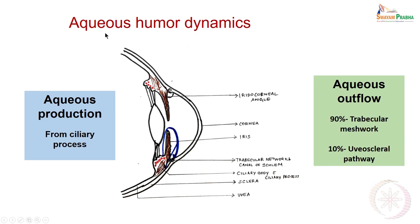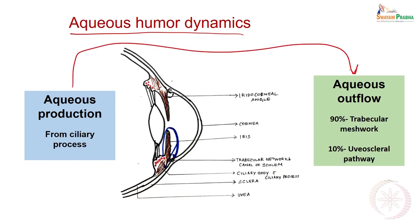Therefore, treatment of Glaucoma is important. This is a diagram which represents a simple way of aqueous humor dynamics. On one side you can see aqueous humor production, and on the other side you can see aqueous humor outflow. Aqueous humor production is from the ciliary process, and you can see the ciliary body here, which makes the aqueous humor.